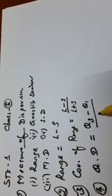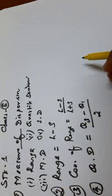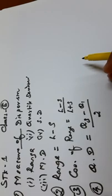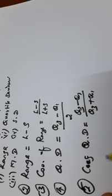The 4th type is quartile deviation, QD. QD involves Q1, Q2, Q3. The coefficient of quartile deviation is Q3 minus Q1 divided by Q3 plus Q1.